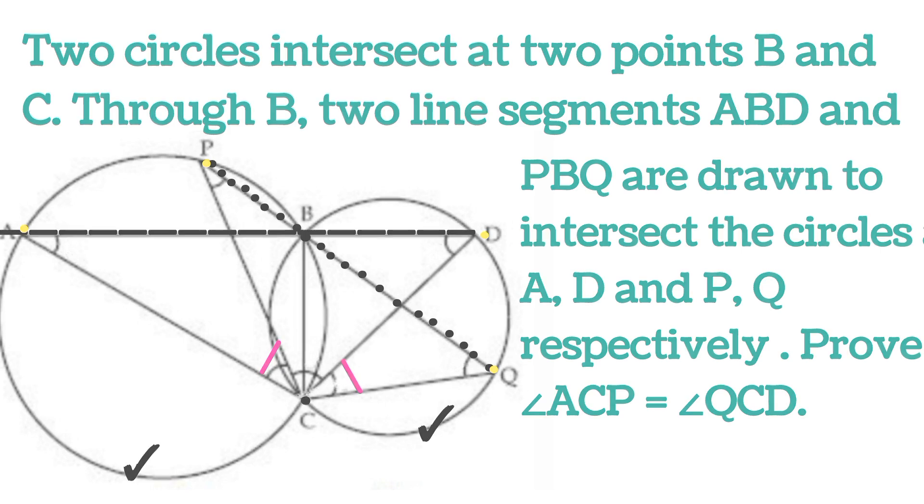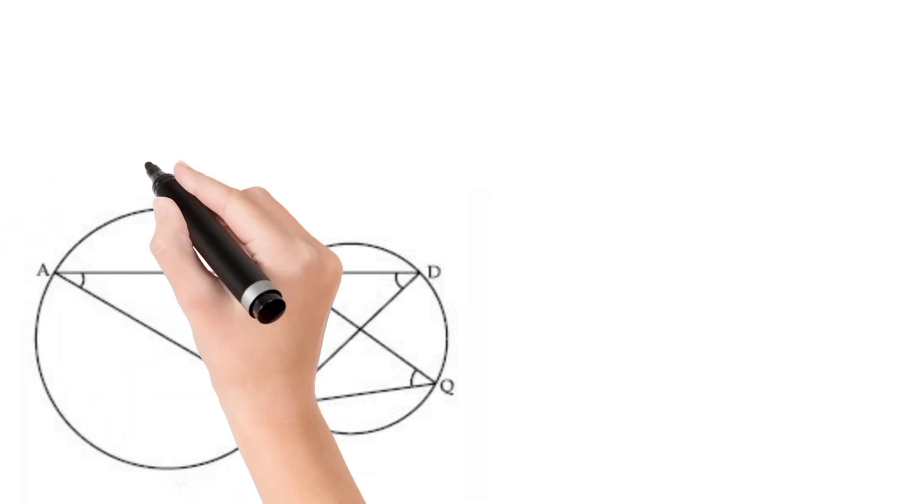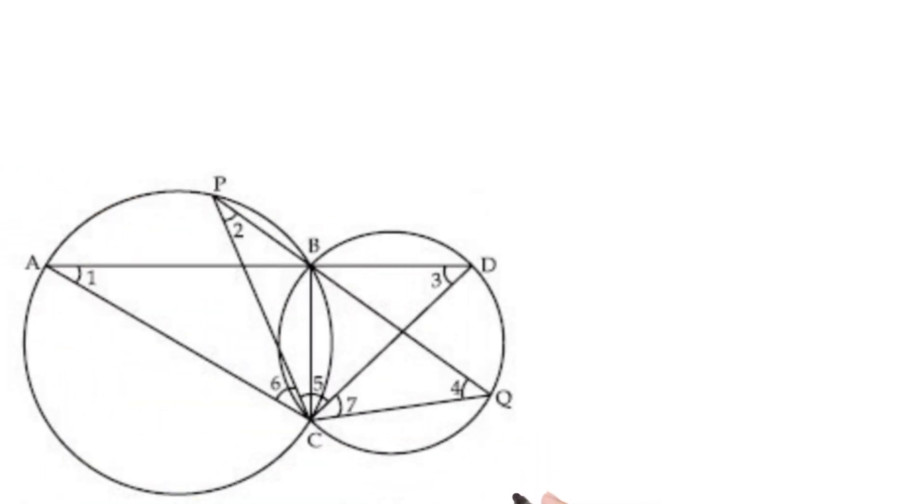Let us solve this question. This is the given figure. Now, let us name all the angles 1, 2, 3, 4, 5, 6, 7. The figure will be something like this.